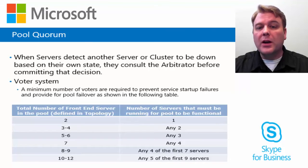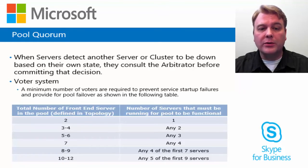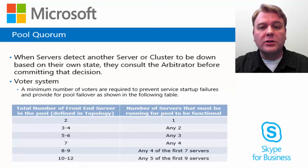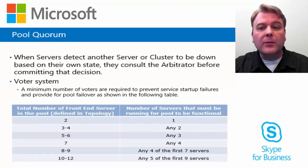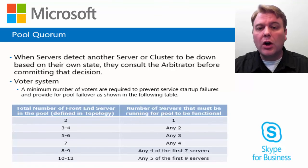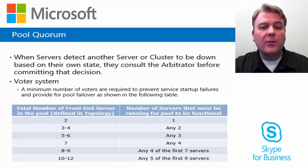If the number of servers running falls below the functional level as shown in the preceding table, the remaining servers in the pool go into survivability mode. After five minutes, if the number of running servers is still below the threshold level, the remaining servers in the pool will stop all Skype for Business services.